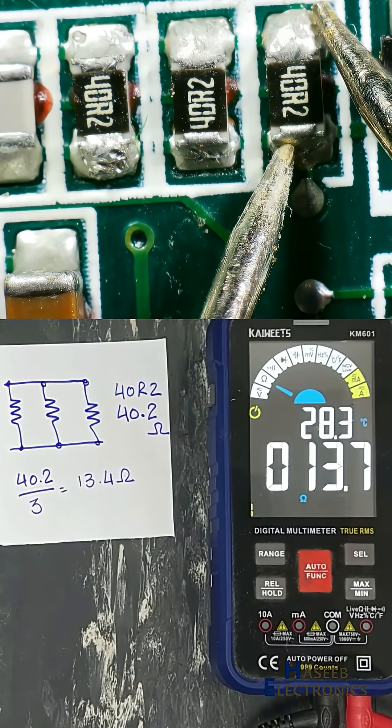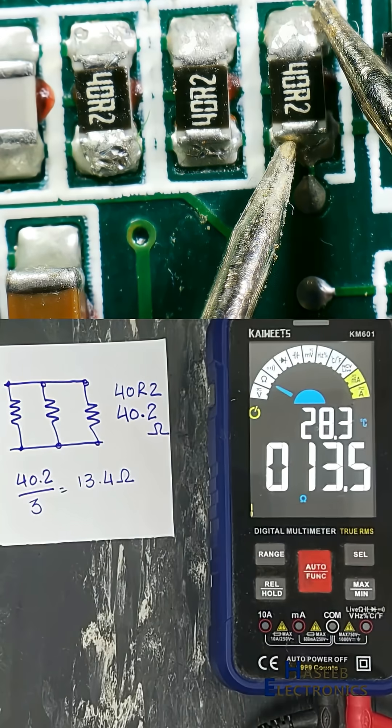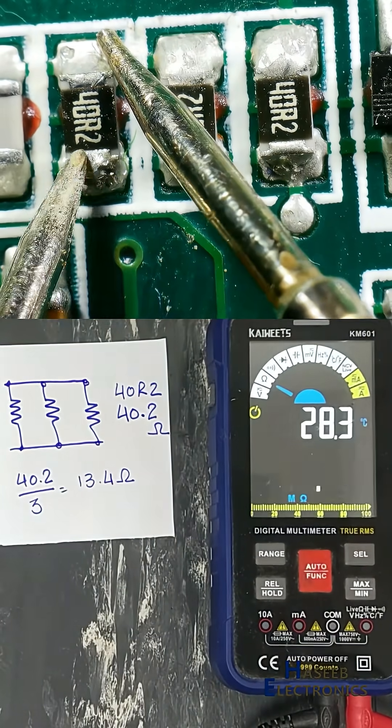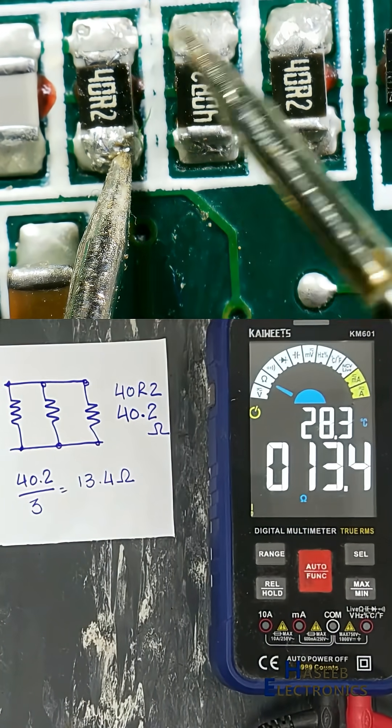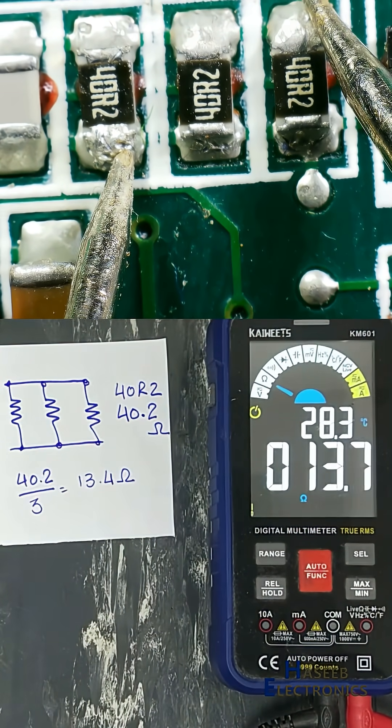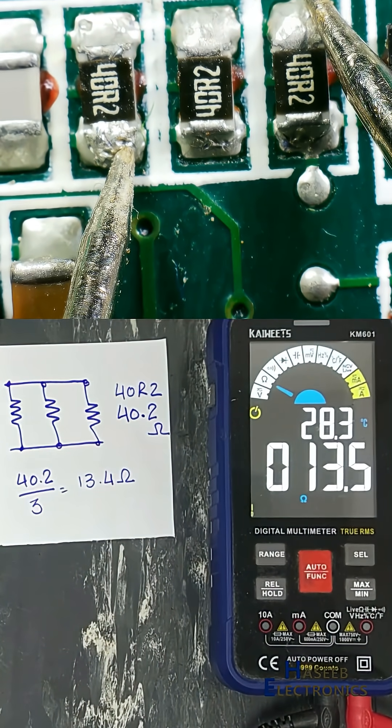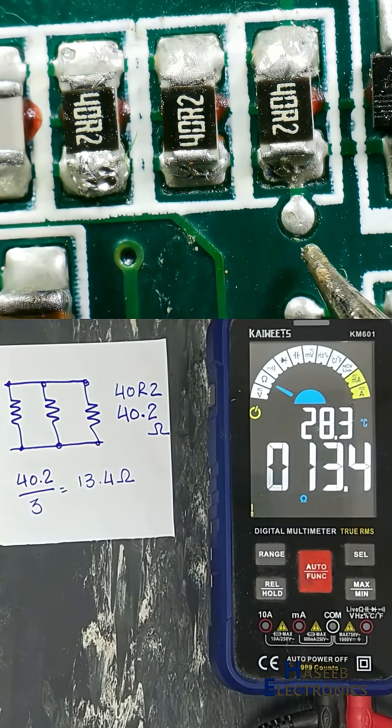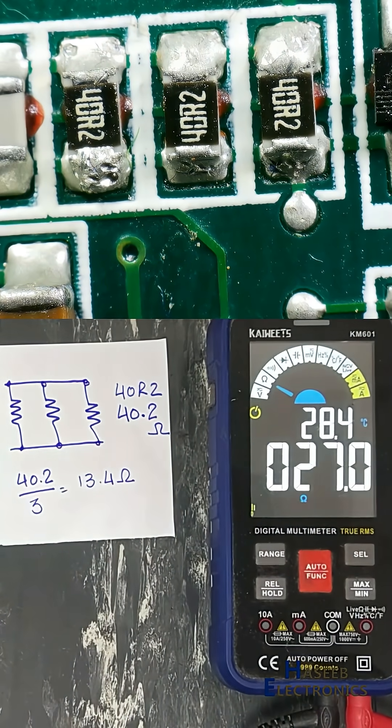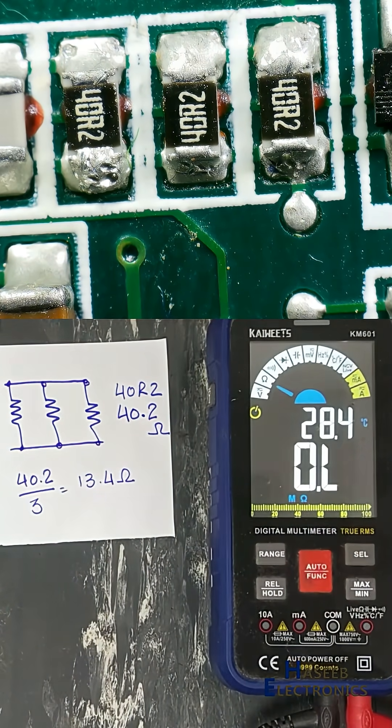Individual resistor value is 40.2, but three in parallel equals 13.4 ohms. From any point, the resistor value will be 13.4 ohms. You can subscribe to my channel for more videos. Thanks for watching.